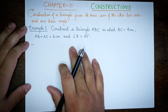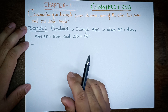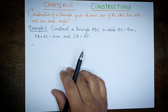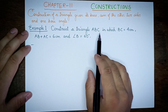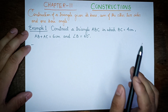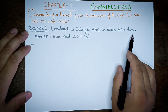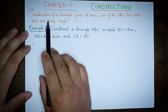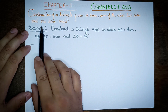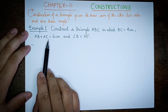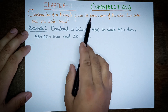The next question is example number 1: Construct a triangle ABC in which the base BC is 4 cm. The base angle is given.